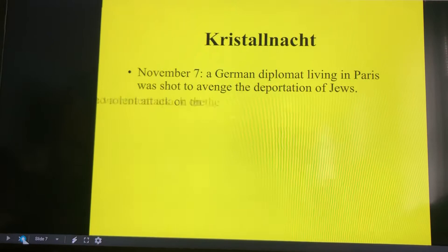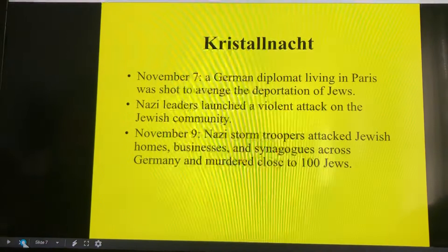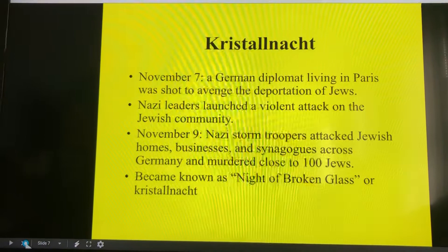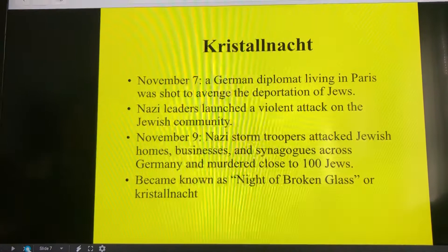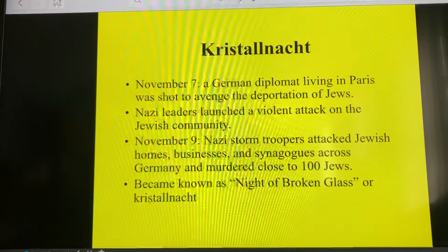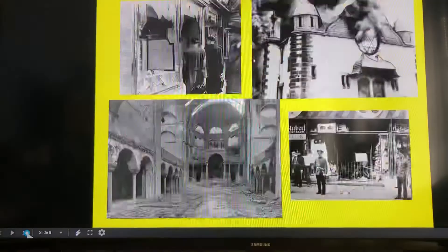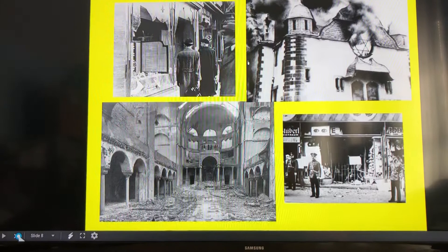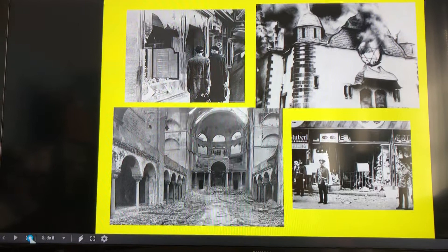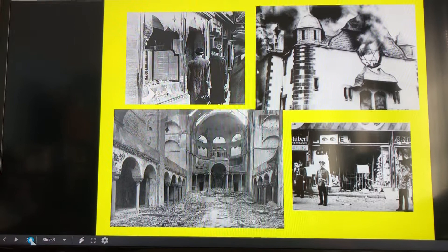Kristallnacht — a German diplomat living in Paris was shot to avenge the deportation of Jews. On the 9th, there was an organized attack by Nazi stormtroopers on Jewish homes, businesses, and synagogues across Germany, and they murdered about a hundred Jews. It became known as the Night of Broken Glass, or Kristallnacht — the word Kristall looking like the English word 'crystal,' showing that German and English are not that far apart. Images from this time period show storefronts and synagogues destroyed — these are primary sources.